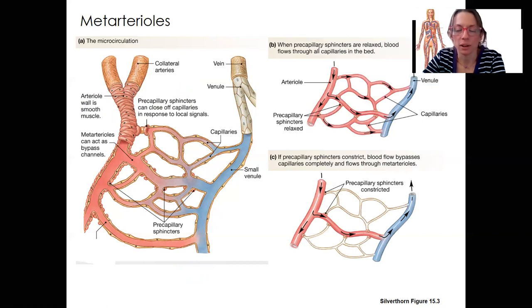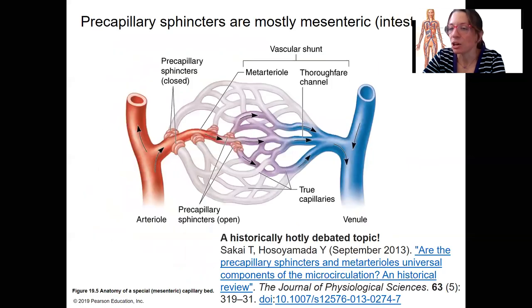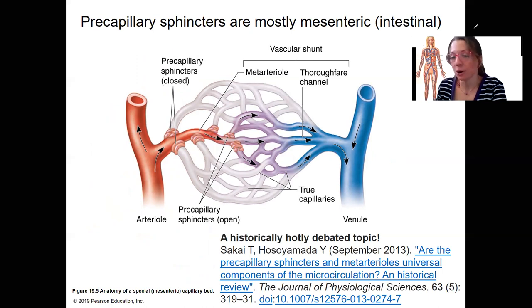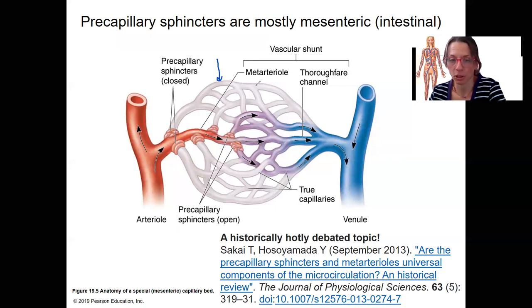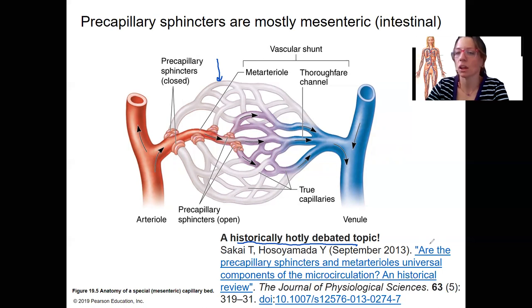There are two different scenarios you could have, and it's thought that this primarily happens in the intestines. You're not providing blood to the intestines if you don't need to — if you're not resting and digesting. If you're running away from a bear, blood flow won't go through those capillary beds. This is a historically debated topic and would be something to read for extra credit.